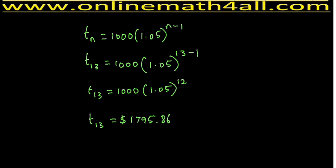The most important thing to remember in this kind of problem: when solving compound interest using geometric sequence and finding the value of the deposit at the end of a particular year — for example, end of the 7th year — you must find the principal for the 8th year by plugging n = 8. I hope students now understand how to solve compound interest problems using geometric sequence. For more videos, please visit www.onlinemathforall.com. Thank you.